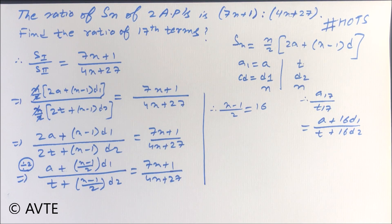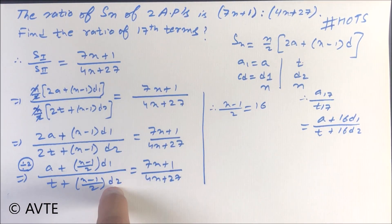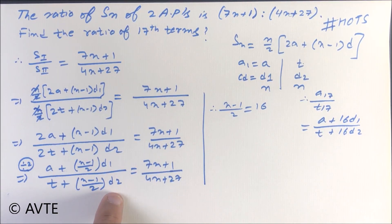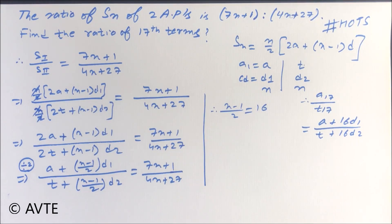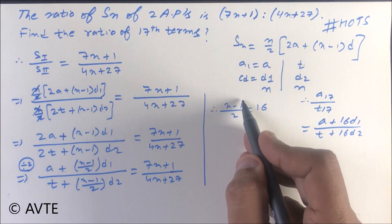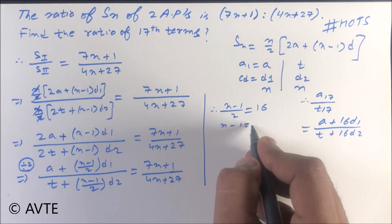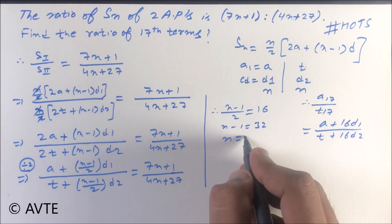You can check denominator also: t, t, d2, d2. If you compare this to this, t will cancel, n minus 1 upon 2 d2, d2 is equal to 16 d2, then d2 will be cancelled. Then n minus 1 upon 2 is equal to 16, so n minus 1 is equal to 32. It means n is equal to 33.